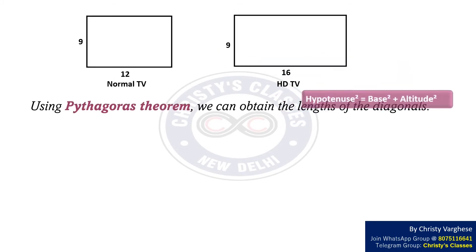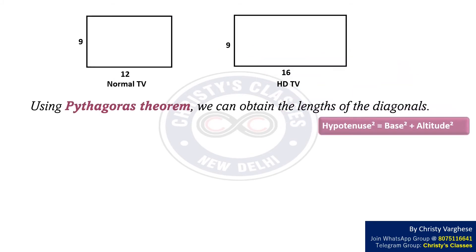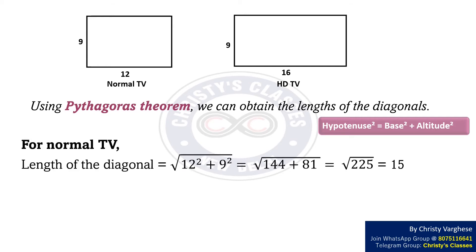Now using the Pythagorean theorem we can obtain the length of the diagonals. The Pythagorean theorem states: hypotenuse squared equals base squared plus altitude squared. For the normal TV, the length of the diagonal equals root of 12 squared plus 9 squared, which equals root of 144 plus 81, which equals root of 225, and that is equal to 15. Therefore the length of the normal TV diagonal is 15.